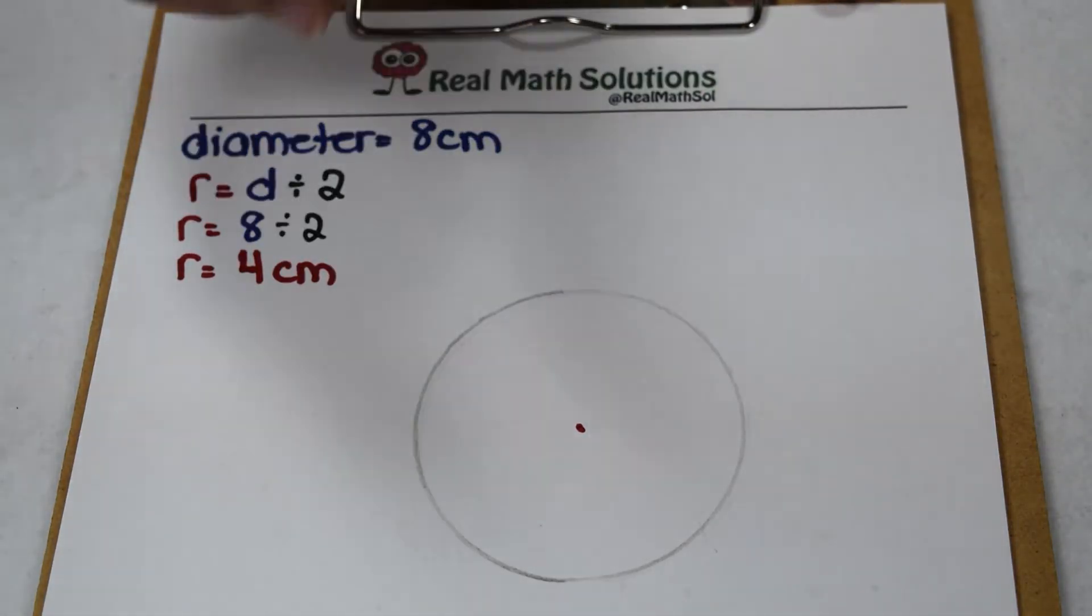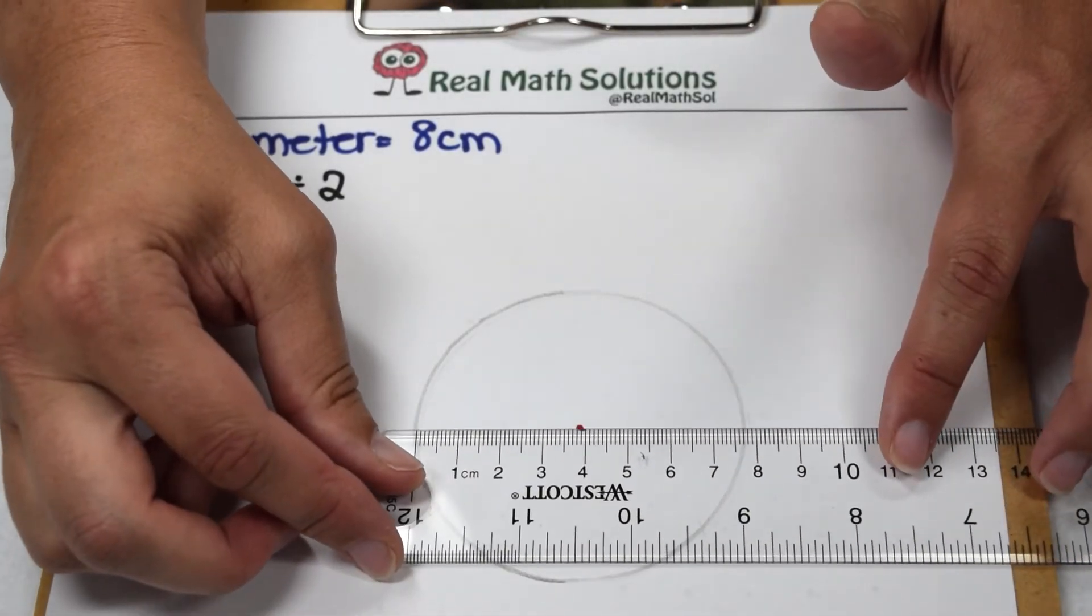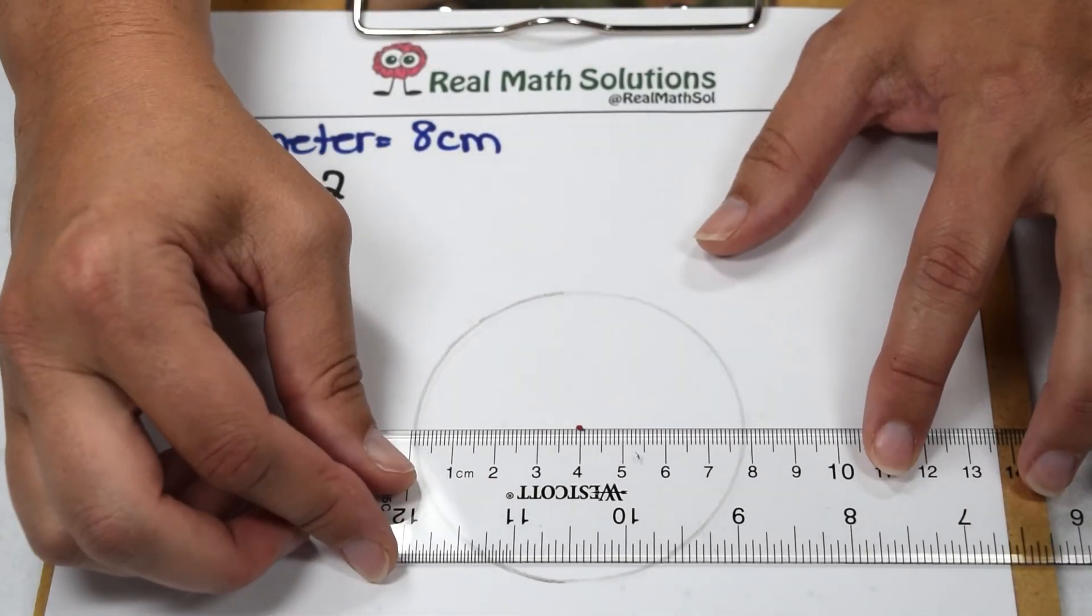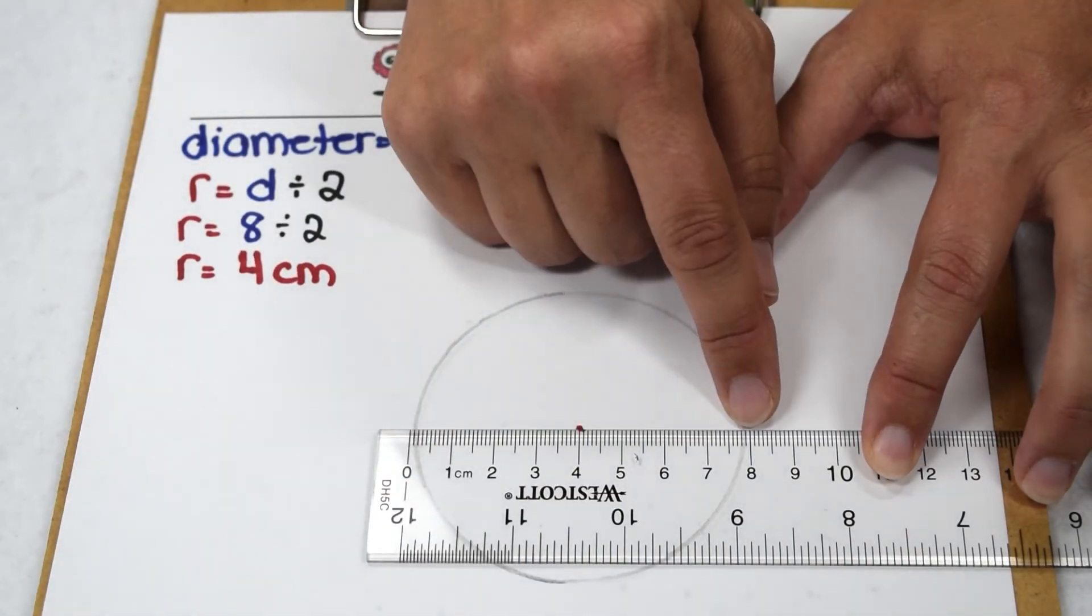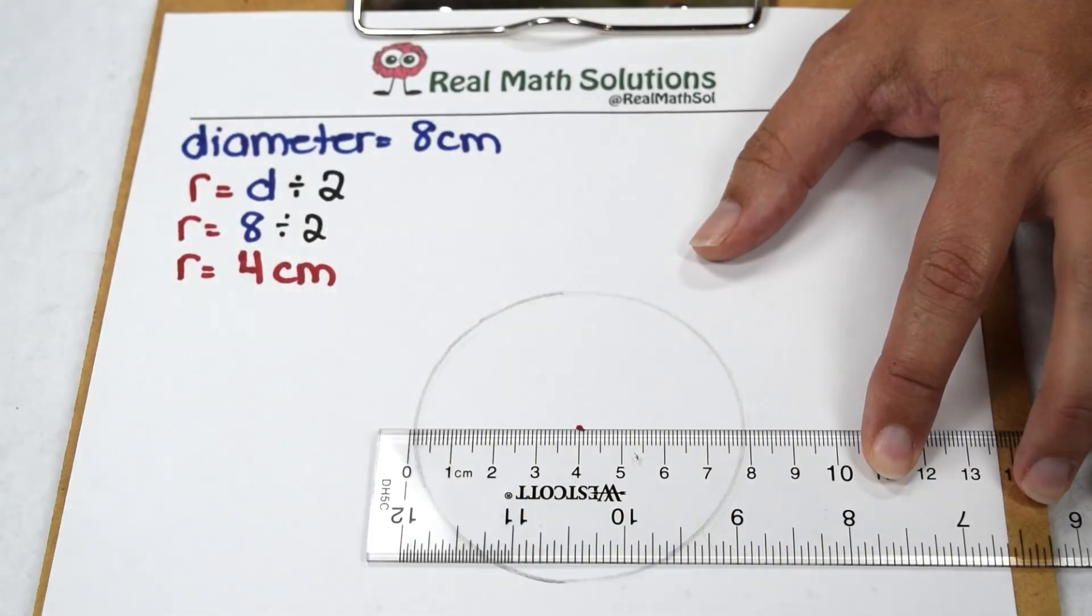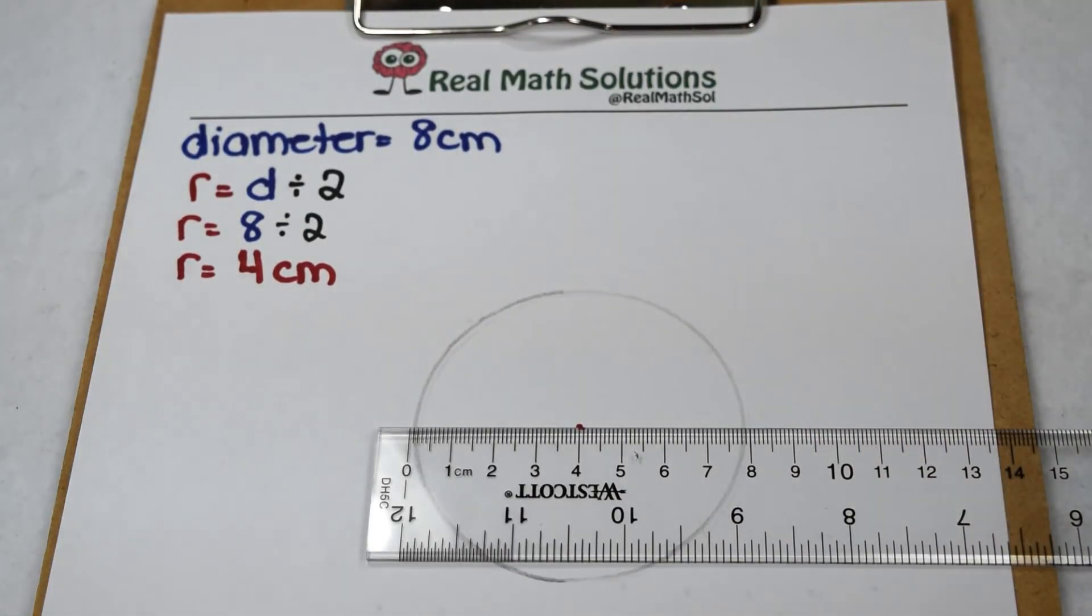We want to see if we measured our eight centimeters correctly. We're going to take our ruler, set zero on the outside edge, pass through the middle, and when we do, we can see that we land at eight centimeters on the other side of the circle. The distance from one edge through the middle to the outside edge of the circle is our diameter. So we created a circle that has an eight centimeter diameter.